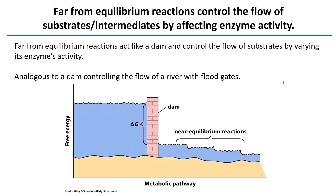Far from equilibrium reactions control the flow of substrates and control the rate of the overall pathway. These enzymes are always saturated with substrate and represent a point where the pathway is naturally slowing down, because those enzymes are functioning at Vmax. Increasing substrate in those situations isn't going to speed up the reaction because they're always saturated anyway. So far from equilibrium reactions can act like a dam to control the flow of substrates by varying the enzyme's activity.